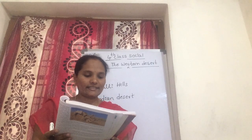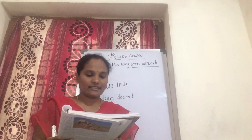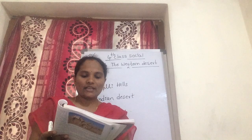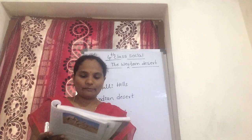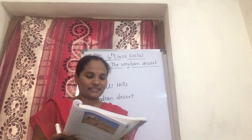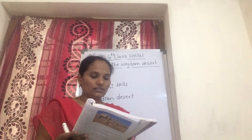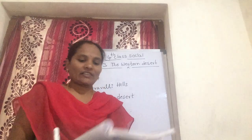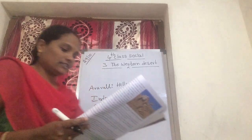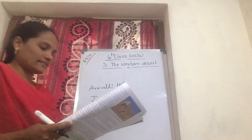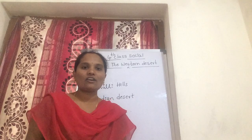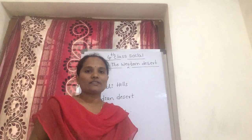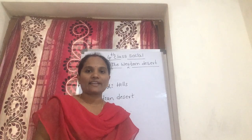The Indian Desert is partly sandy and partly rocky. In many places there are small hillocks of sand. What is that? In many places there are small hillocks — hillocks of sand.